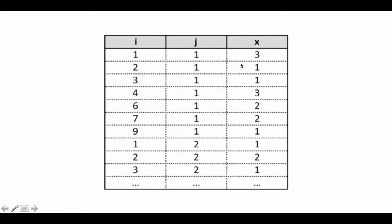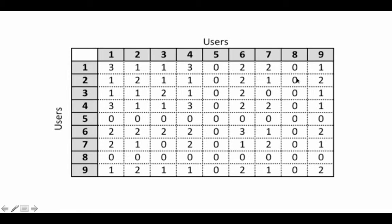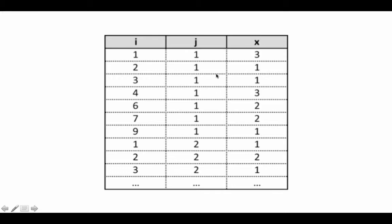In the sparse representation, elements which are zero don't appear at all. So if you have a 10,000 by 10,000 matrix with only around 100,000 non-zero elements — as opposed to the 10 to the power of 8 possible combinations — representing only non-zero cells by indicating their row and column numbers makes a lot more sense. Using matrix multiplication and other operations that R provides, you can actually create this information.